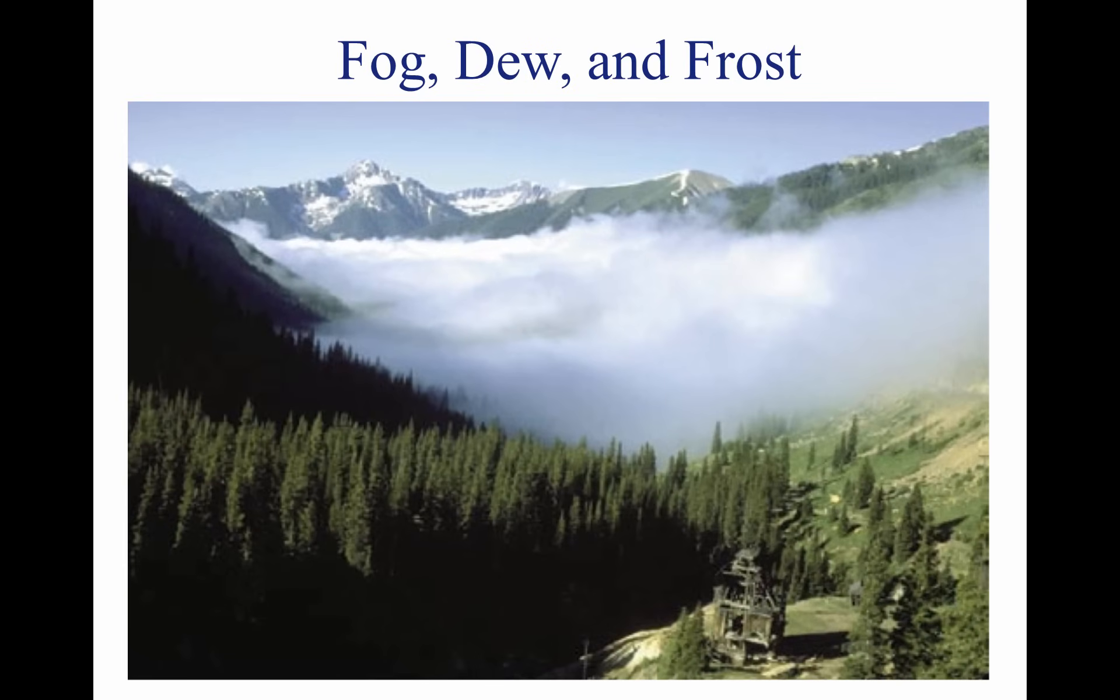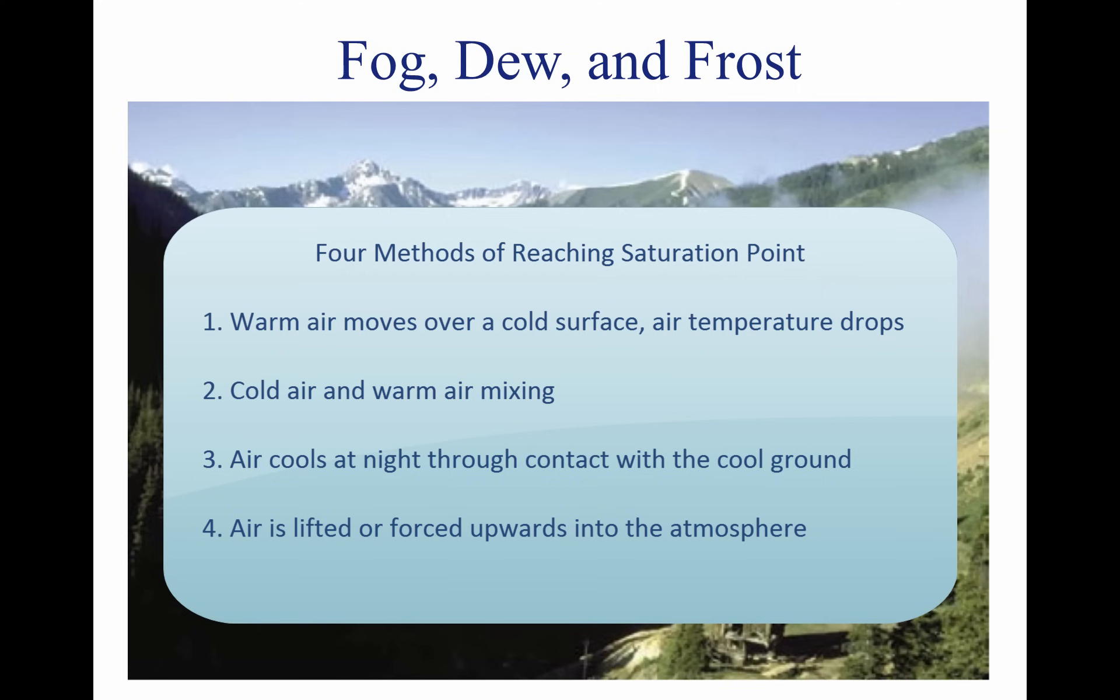If air reaches the saturation point while temperature and dew point are close together, it is highly likely that fog, low clouds, and precipitation will form. There are four methods by which air can reach the complete saturation point.